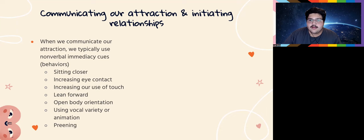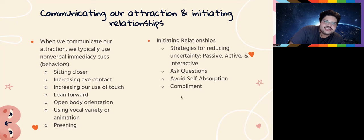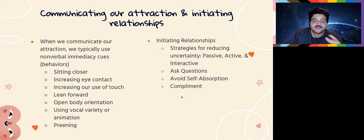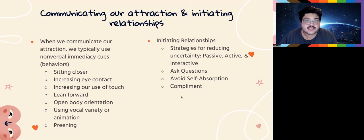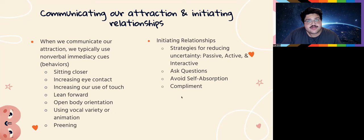When we initiate relationships, there's uncertainty — things we don't know about each other — and humans are uncomfortable with uncertainty. This is called uncertainty reduction theory: we want to feel more comfortable by knowing more about another person. The passive way is observing — stalking someone's Instagram, paying attention to context clues in the situation without actually talking to them yet.